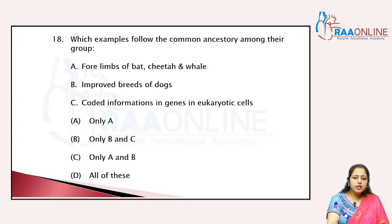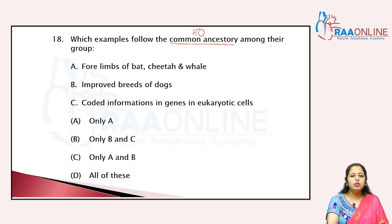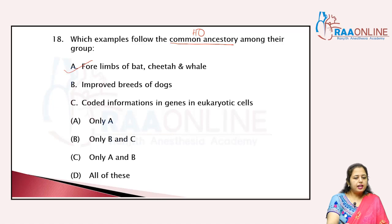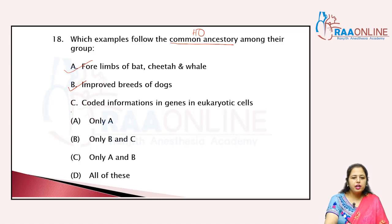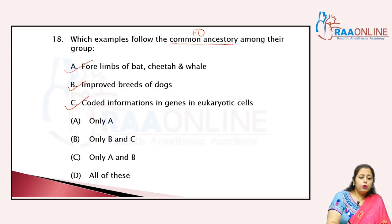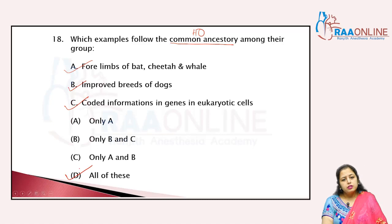Which example follows common ancestry? Common ancestry means they are talking about homologous organs. Four limbs of bat, cheetah, and whale — exactly, that is an example of homology. Improved breeds of dogs, and coded information in genes in eukaryotic cells — also correct, because we are talking about common ancestries. So all of these is the answer.